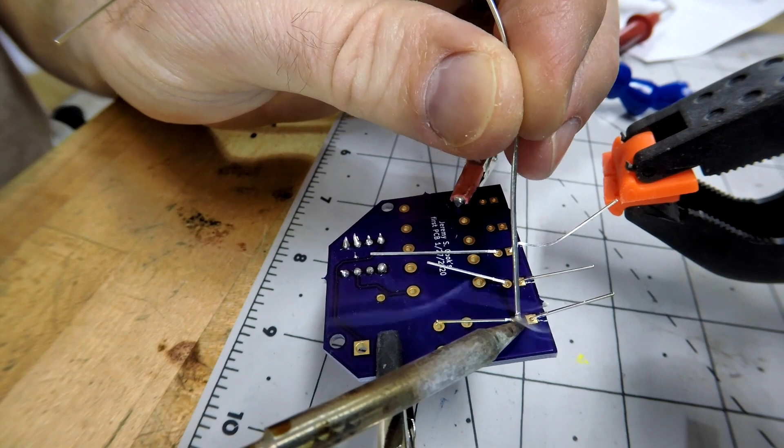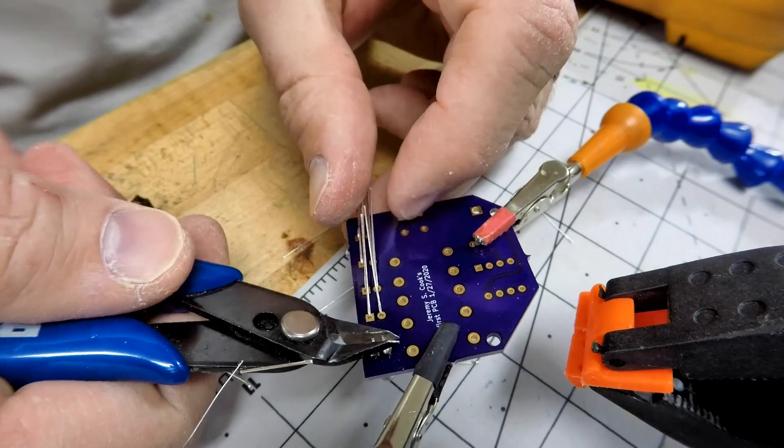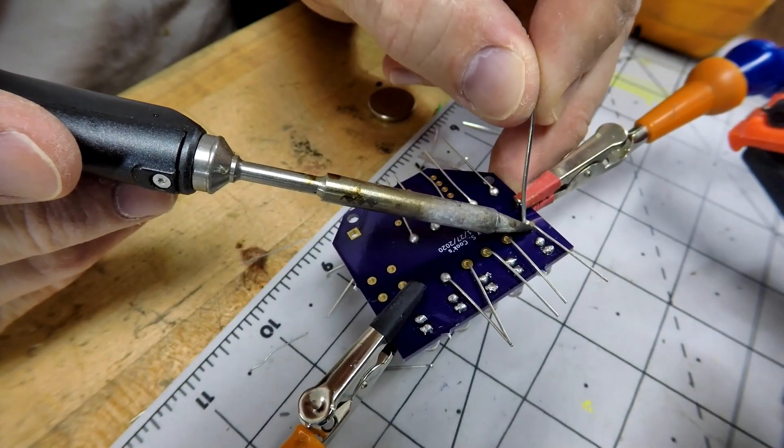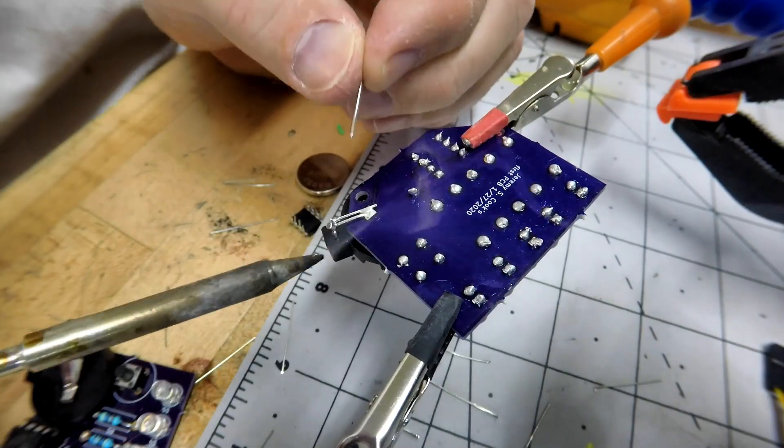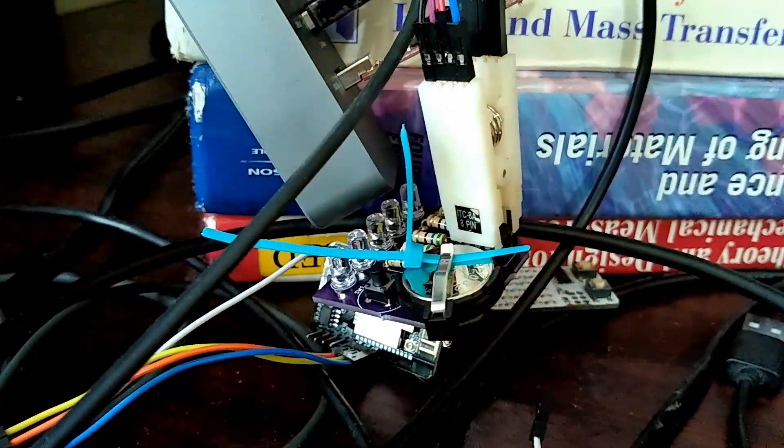Even though I ordered one board Oshpark generally sends you three boards, I think their minimum order is three. So I had three of these lying around and instead of just throwing them away I programmed them to do different tasks.